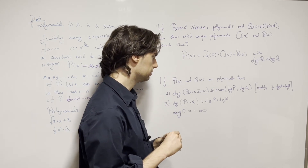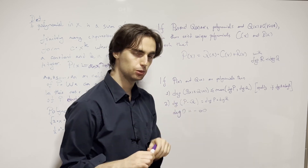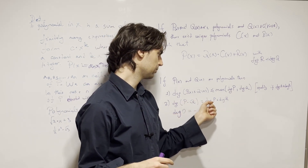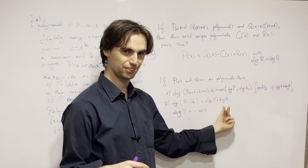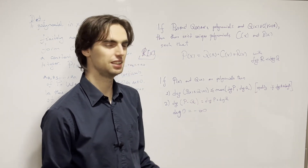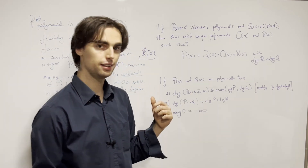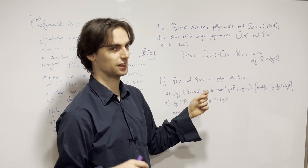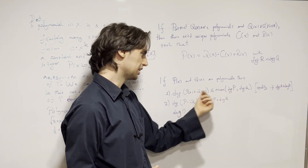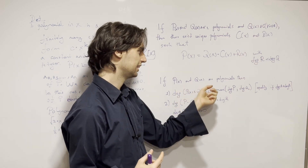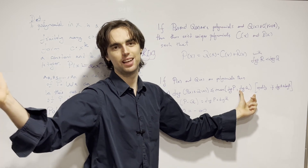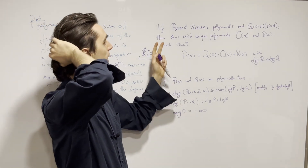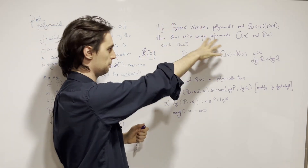The degree of the zero polynomial is defined to equal negative infinity. This is chosen so that these degree equalities always hold. For example, if p of x equals zero for all x, then p times q is zero, and we need degree of zero plus degree of q to work out. We take degree of zero to be negative infinity — because if p of x minus q of x is zero, we want degree of zero to be less than or equal to the max of their degrees.